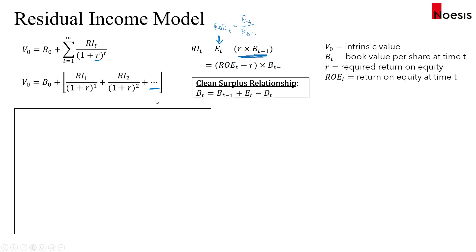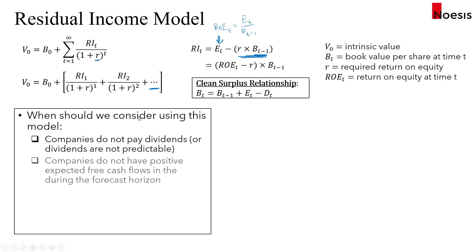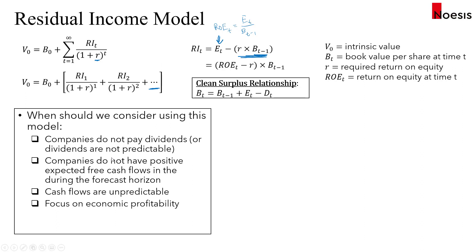When should we consider using the residual income model? It's appropriate when a company doesn't pay dividends or dividends are not predictable, when companies do not have positive expected free cash flows during the forecast horizon, when cash flows are unpredictable, when the analyst's focus is on economic profitability, or when there is a lot of uncertainty in forecasting terminal values in the free cash flow or dividend discount models.